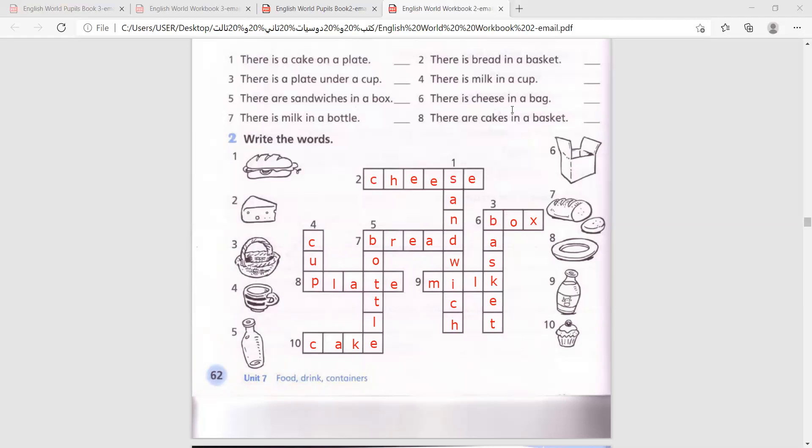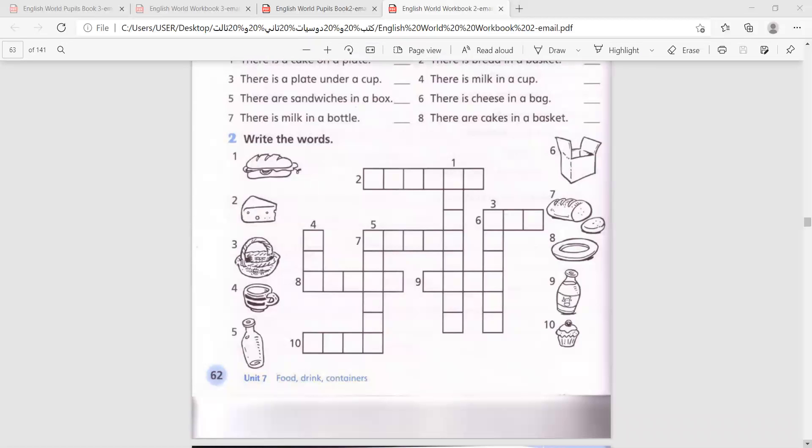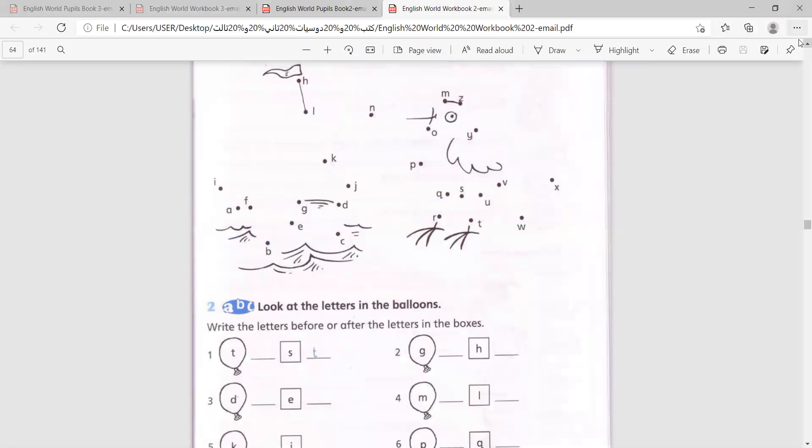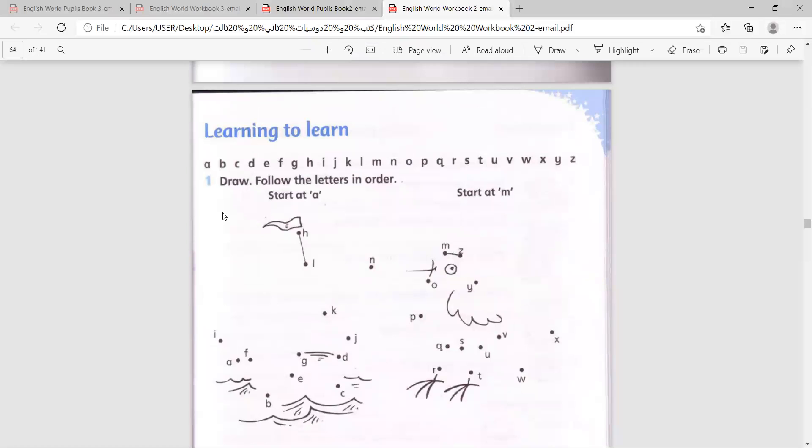Now page number 63. Let's do it together. And here we will learn about something new. Now I want you to read with me the alphabet. A, B, C, D, E, F, G, H, I, J, K, L, M, N, O, P, Q, R, S, T, U, V, W, X, Y, and Z.